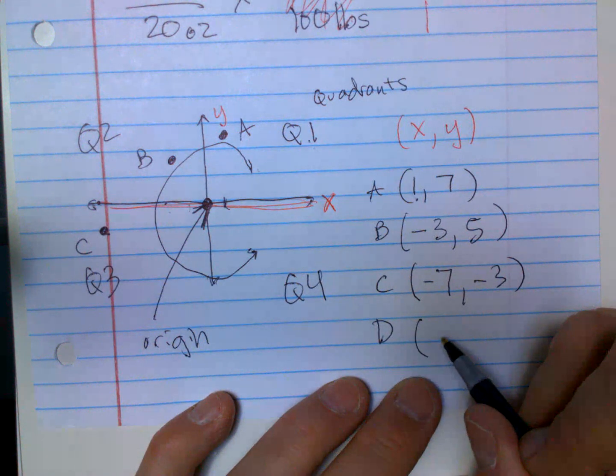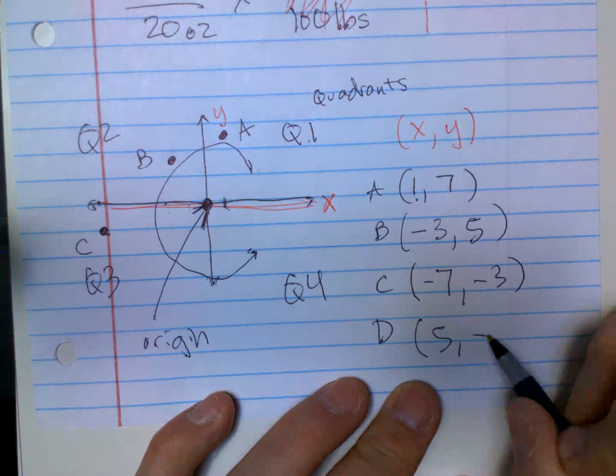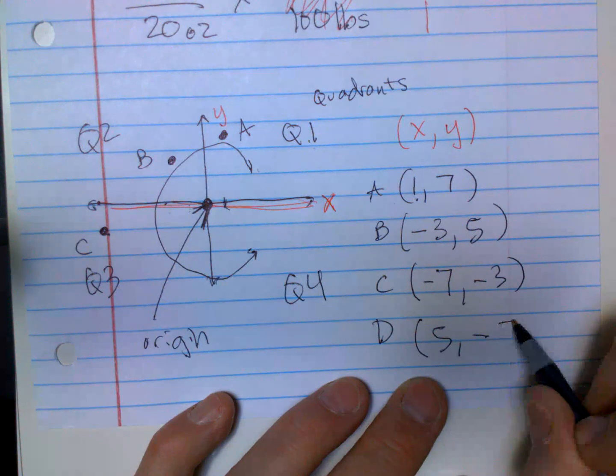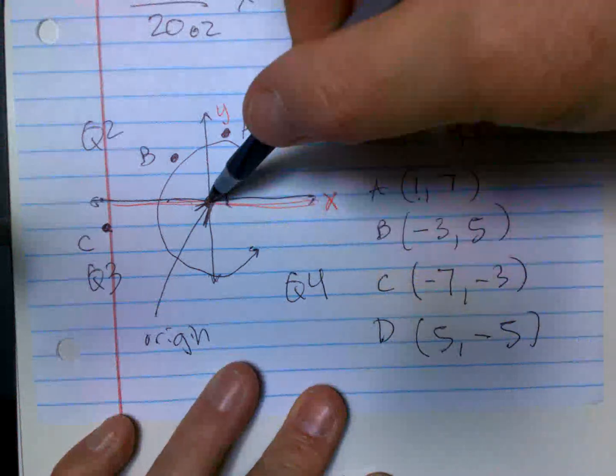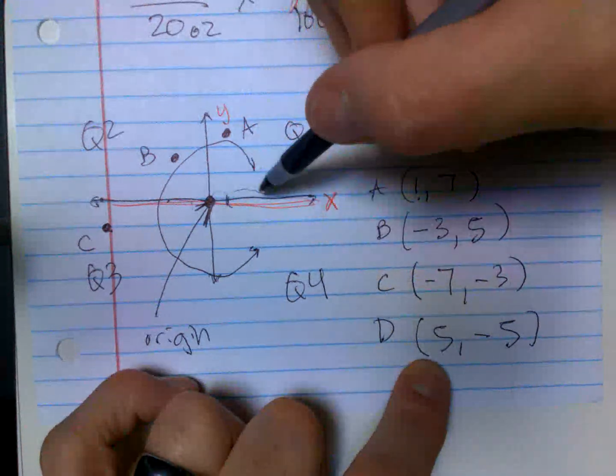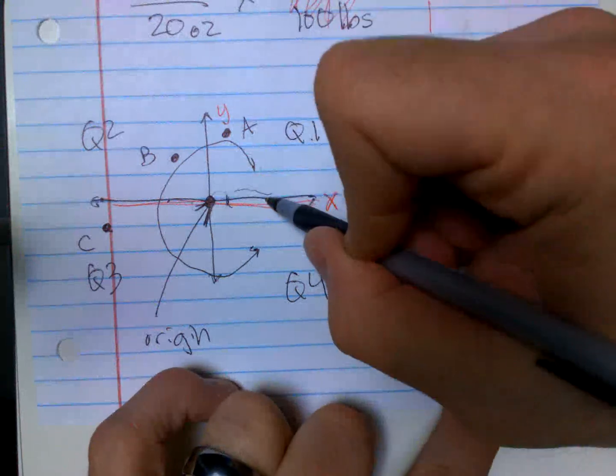And then for point D will be a positive and then a negative. Let's go five, negative five. So I'm going to go from zero, zero. I'm going to go five positive first. Let's say it's about right here. I'm going to go down five.